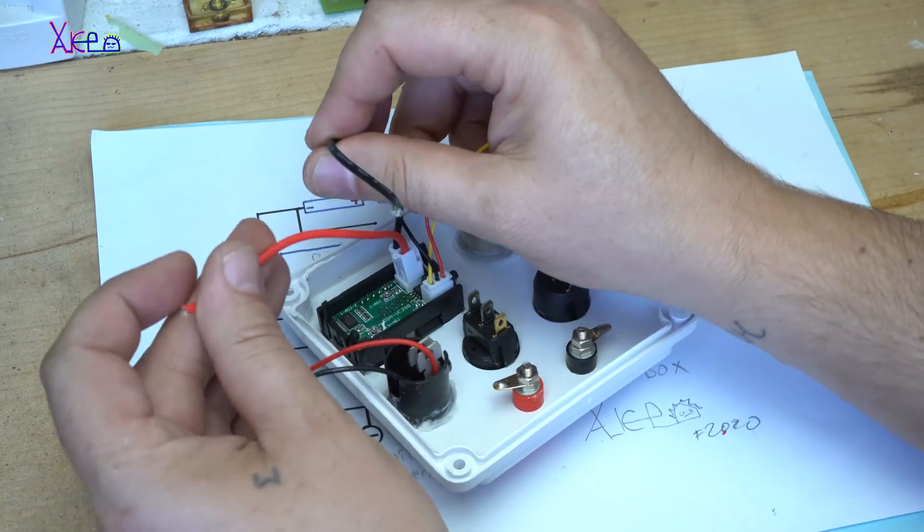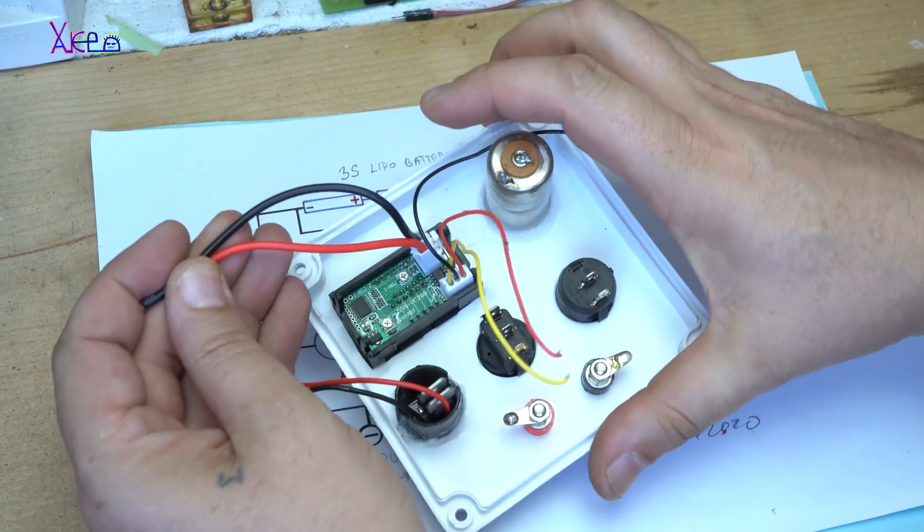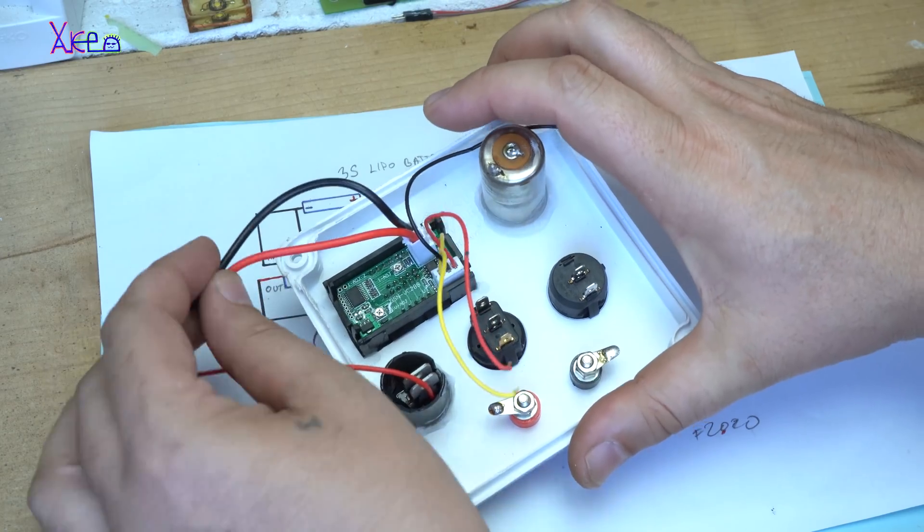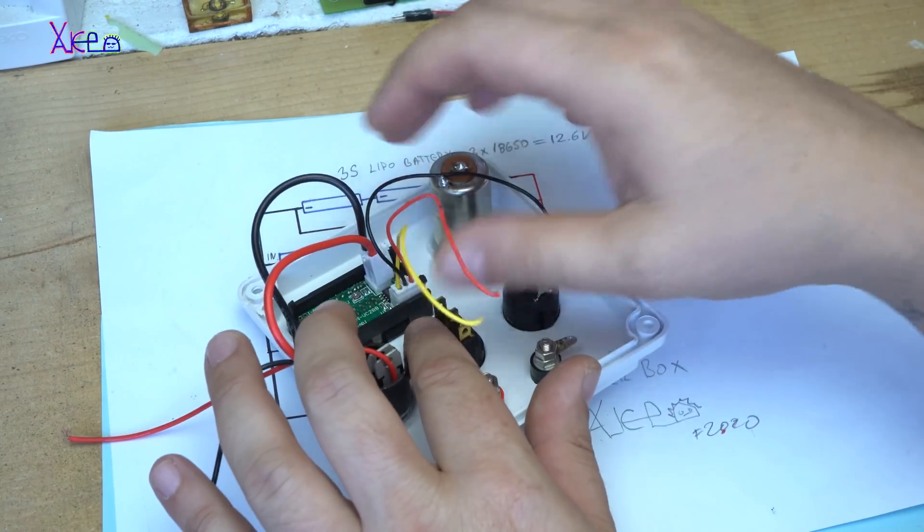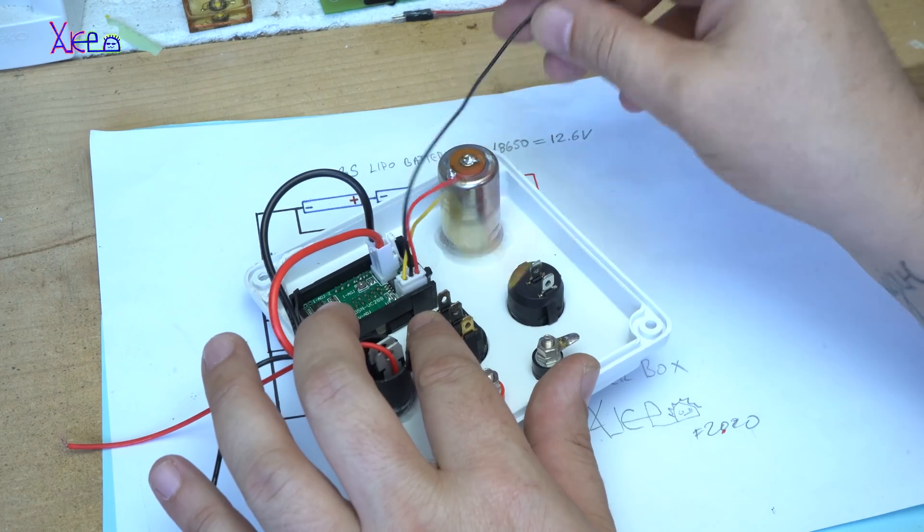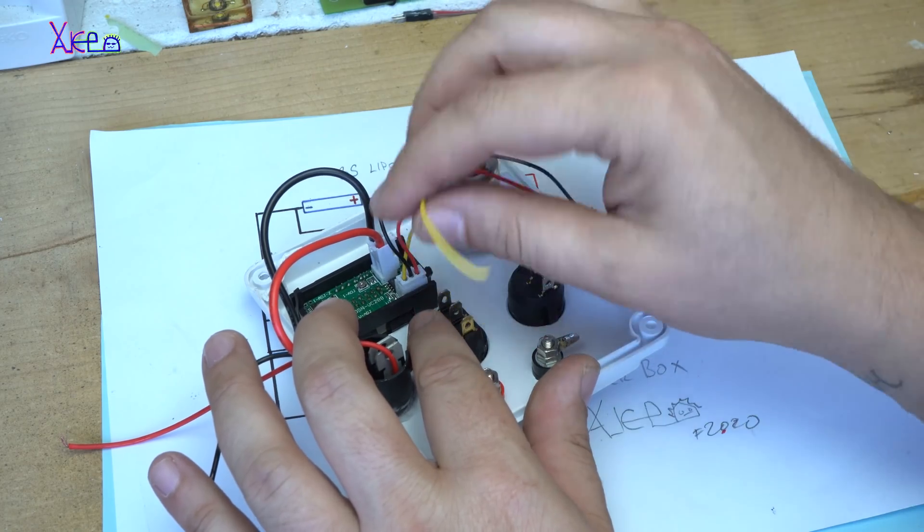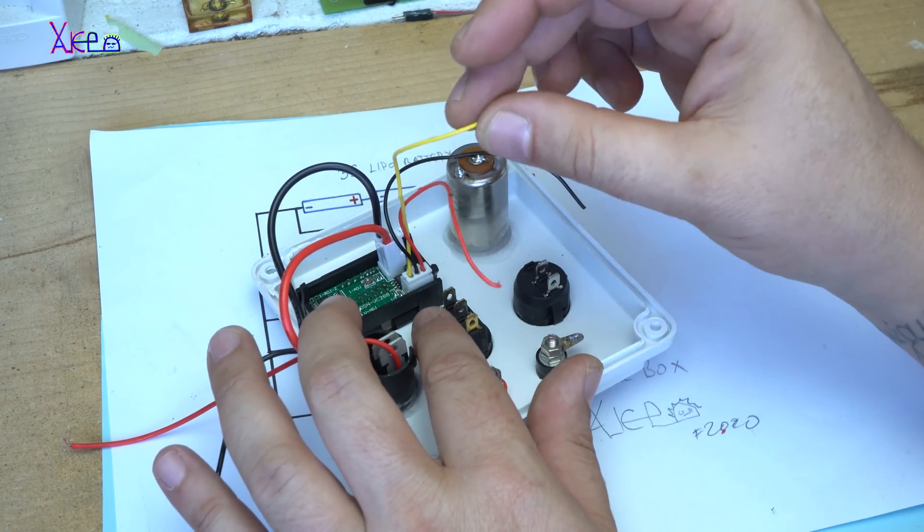These two wires are for measuring current, and these three wires - ground, positive, and this yellow wire - are for measuring the voltage.